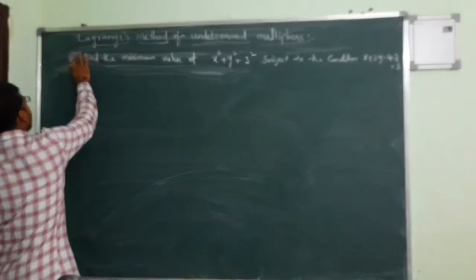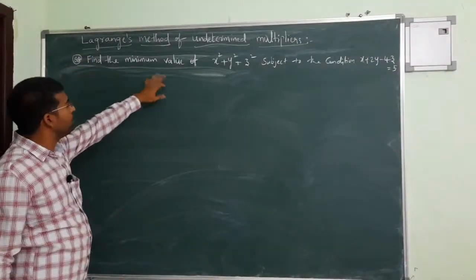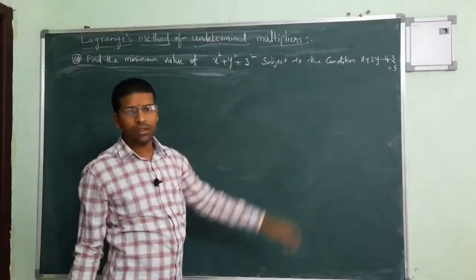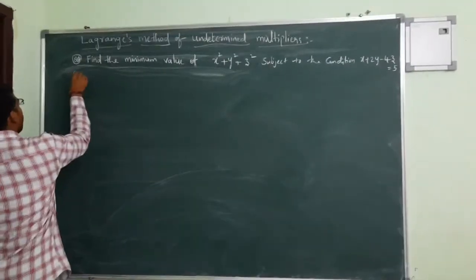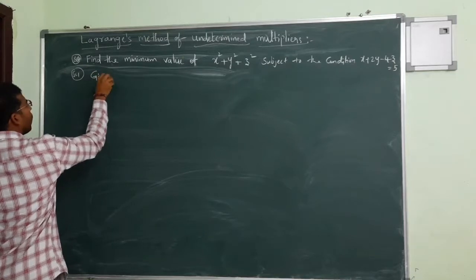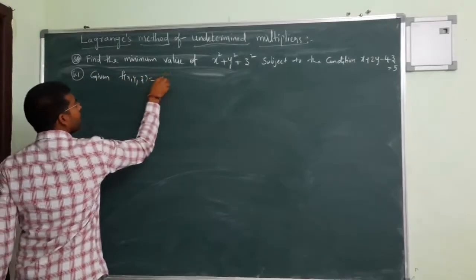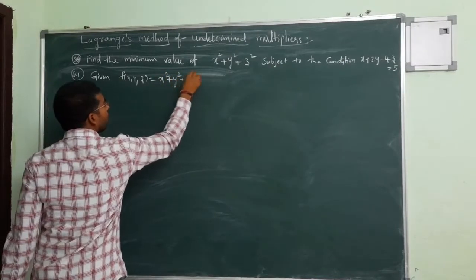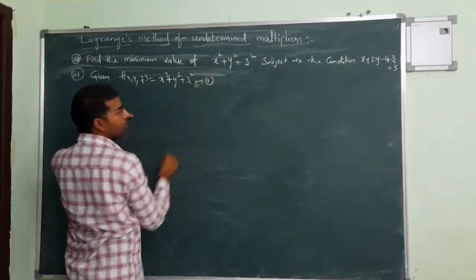Let us see the fourth question: find the minimum value of the function subject to the condition. You start the solution. First, what is the given f of x, y, z? The given function is x squared plus y squared plus z squared. This I will take as equation 1.